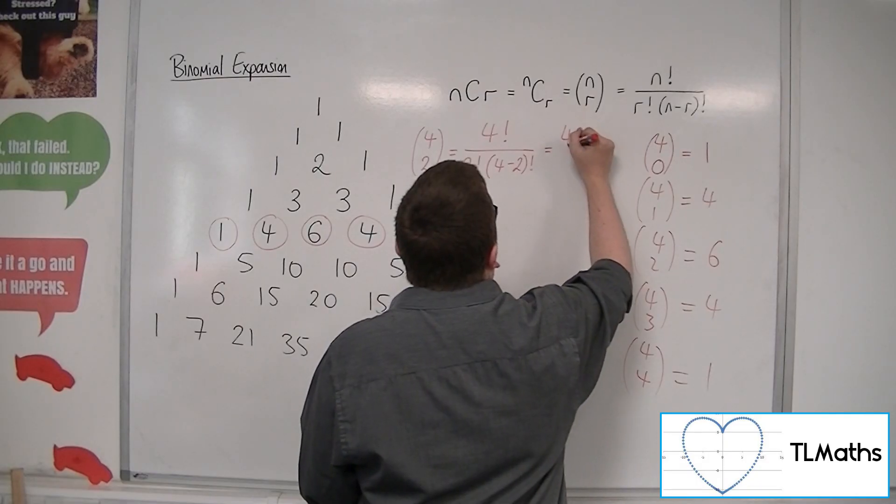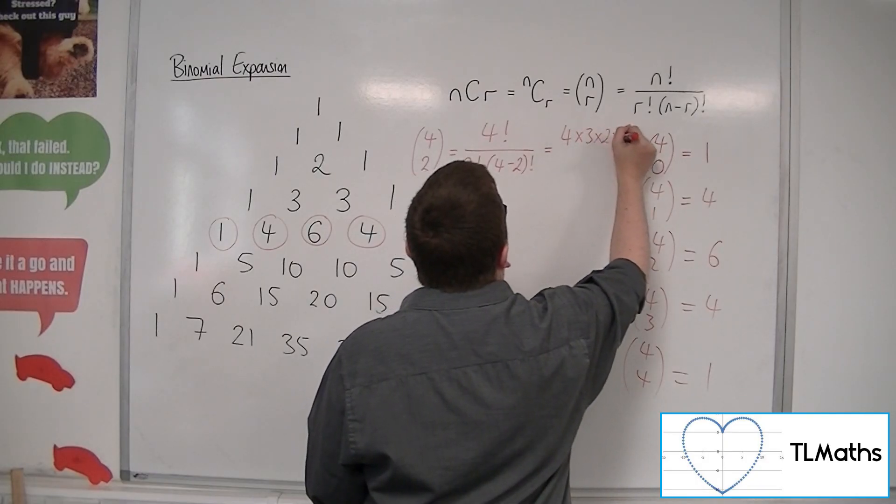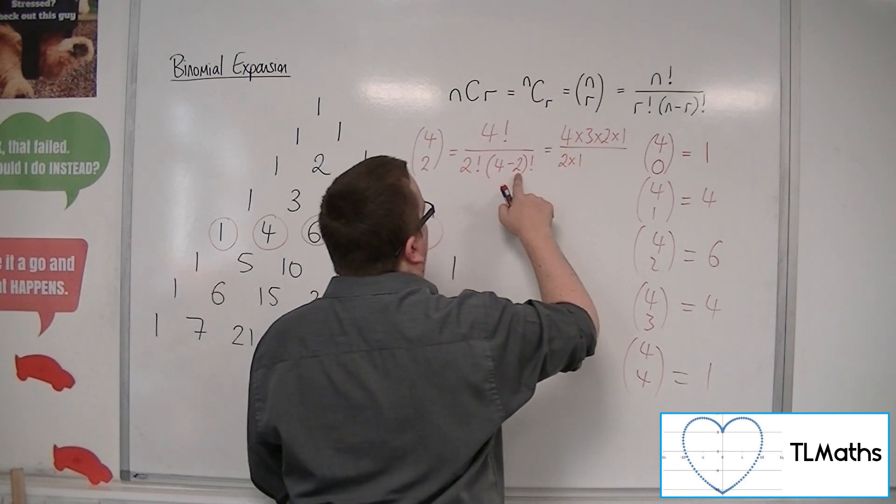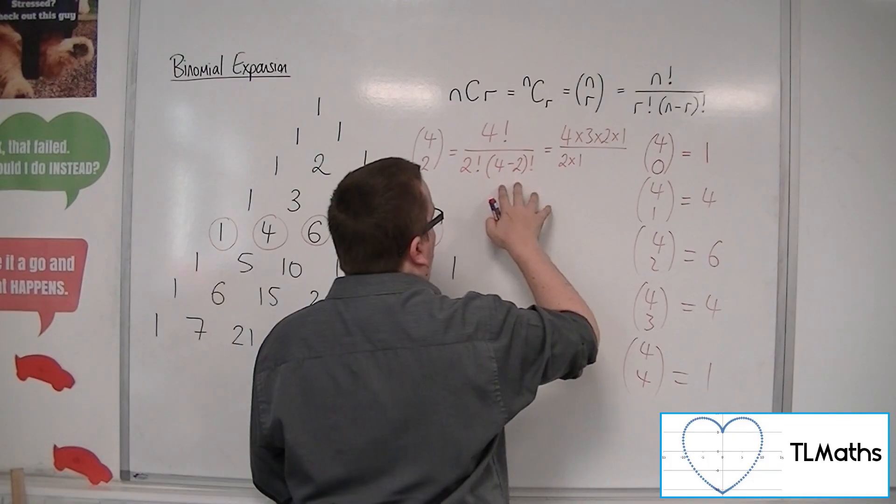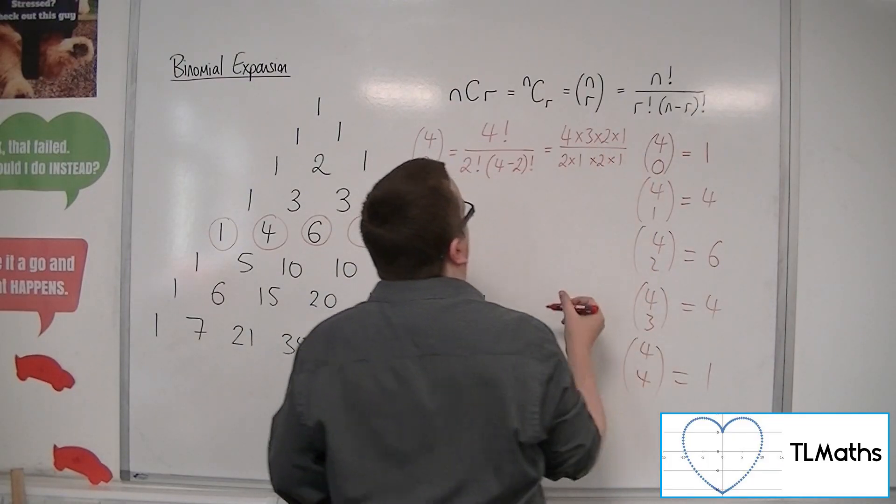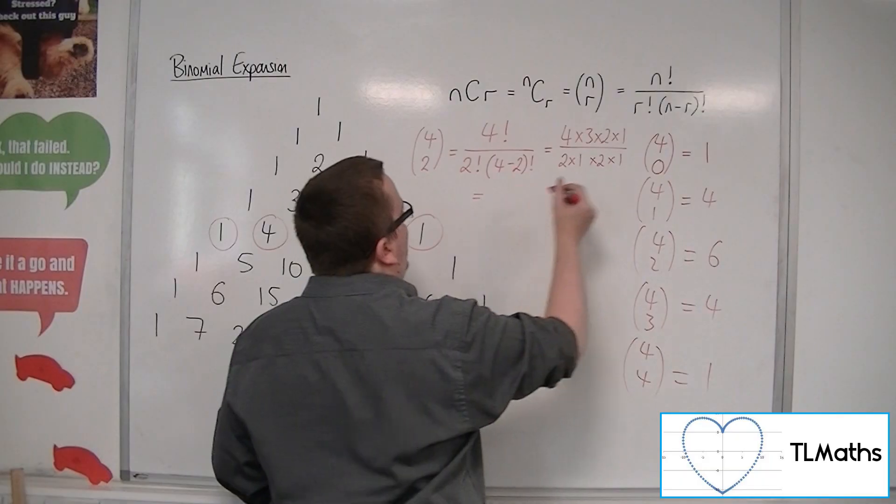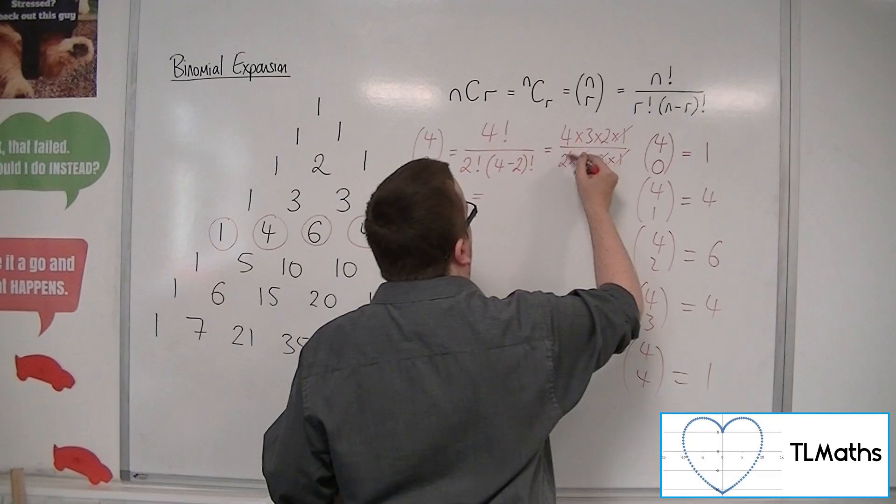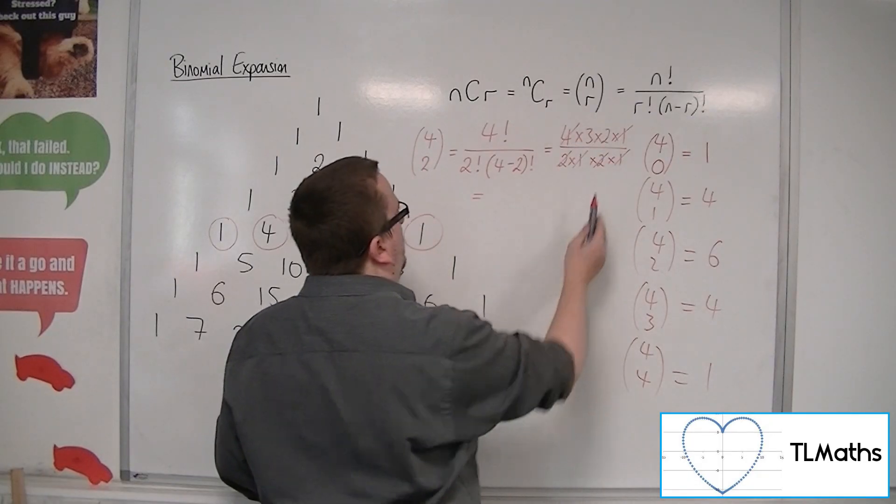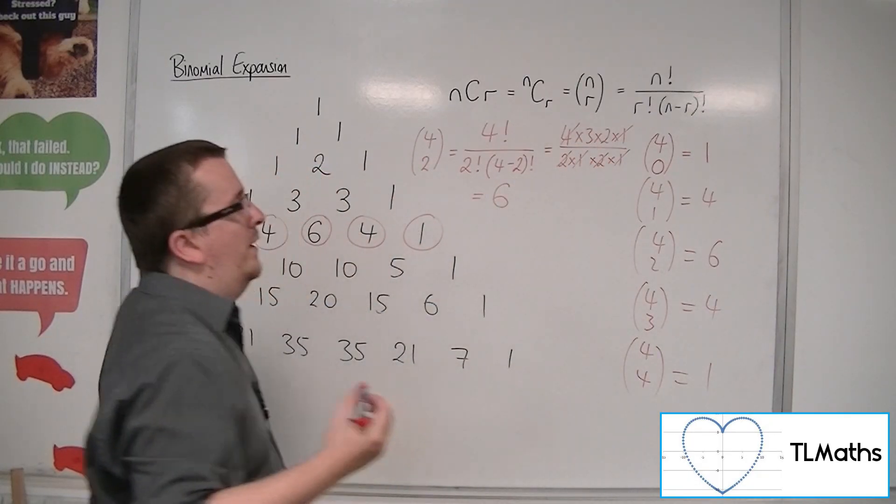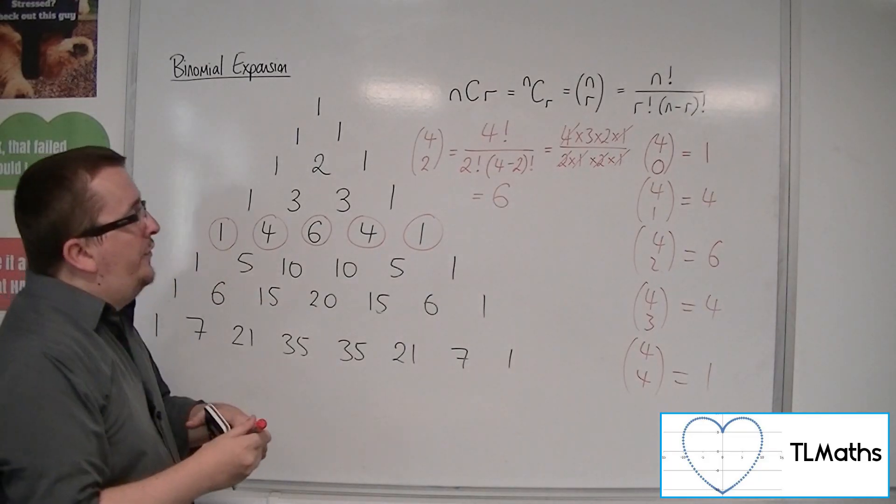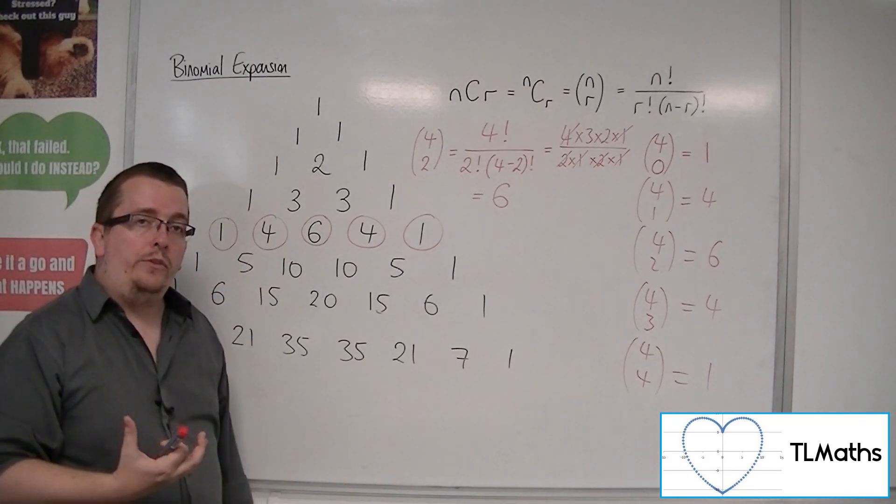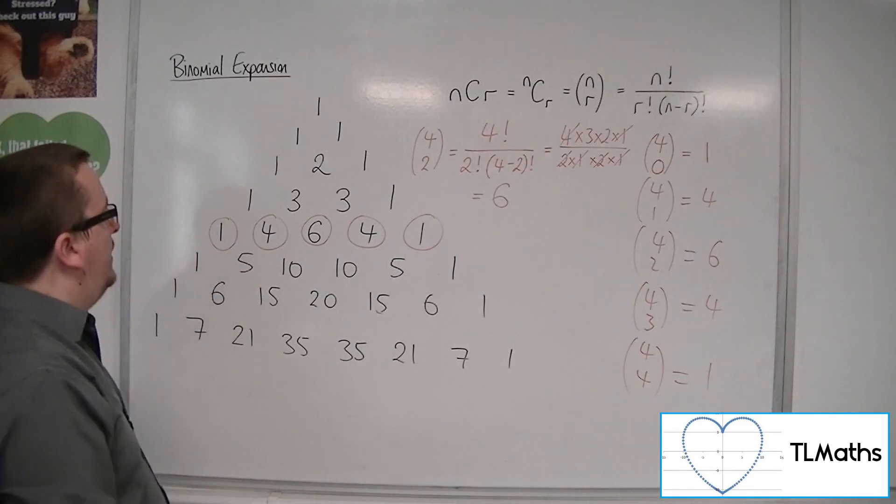4 factorial is 4 times 3 times 2 times 1. 2 factorial is 2 times 1. (4 minus 2) factorial is 2 factorial, which is 2 times 1. If we cancel, the 1s don't matter. 2 times 2 cancels with the 4, leaving 3 times 2, which equals 6. You can use the formula to evaluate particular values within Pascal's triangle.